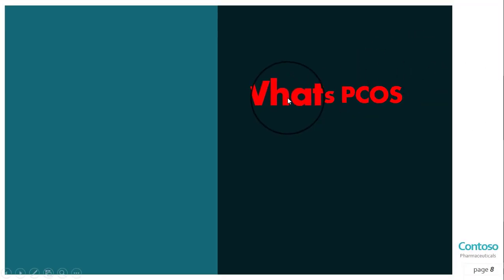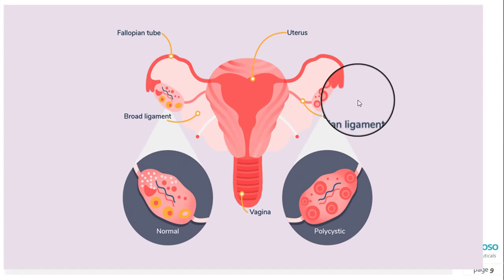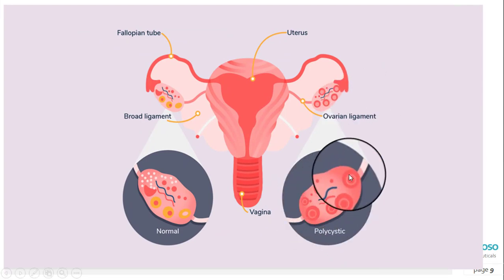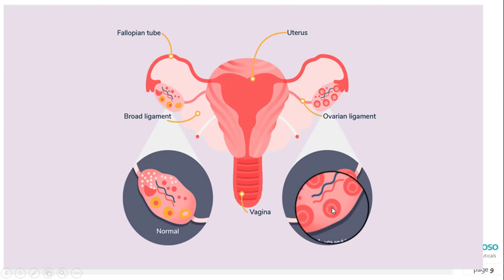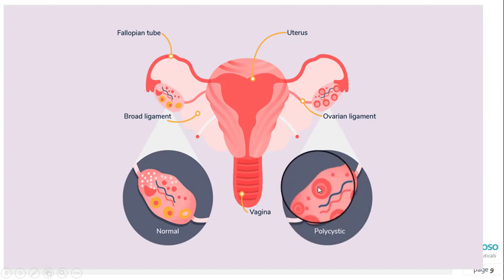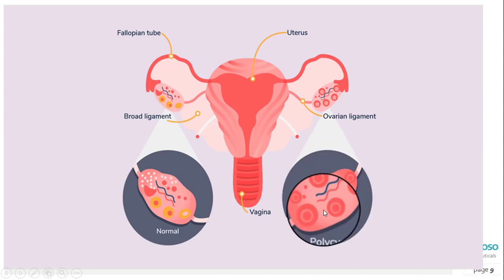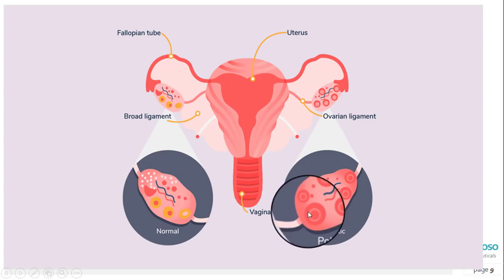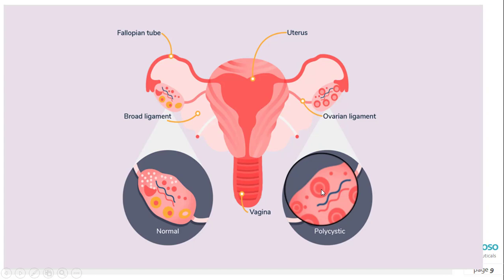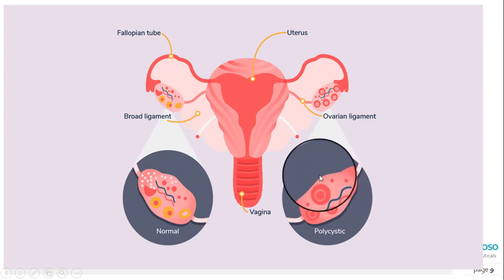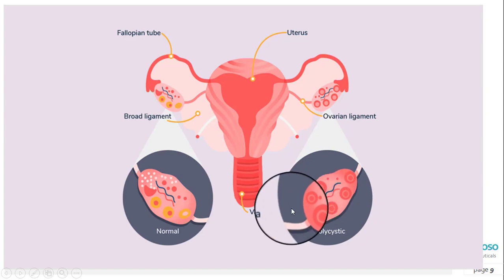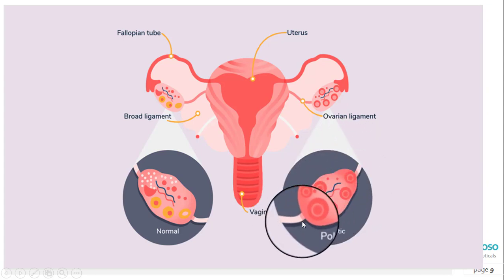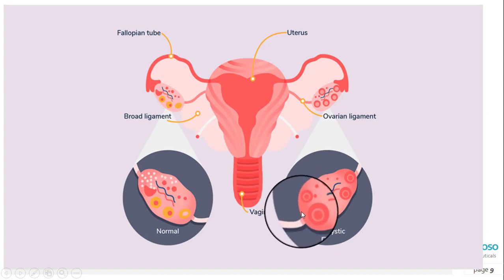Now let's discuss the main topic: PCOS or PCOD. Polycystic ovarian syndrome is a condition that affects women's hormone levels. Women with PCOS produce higher than normal amounts of the male hormone testosterone. This hormone imbalance causes them to skip menstrual periods and makes it harder for them to get pregnant. PCOS affects the ovaries — the reproductive organs that produce estrogen and progesterone, the hormones that regulate the menstrual cycle.